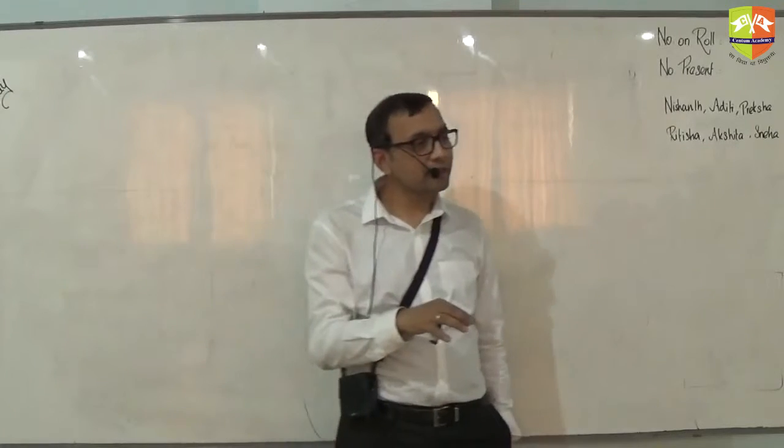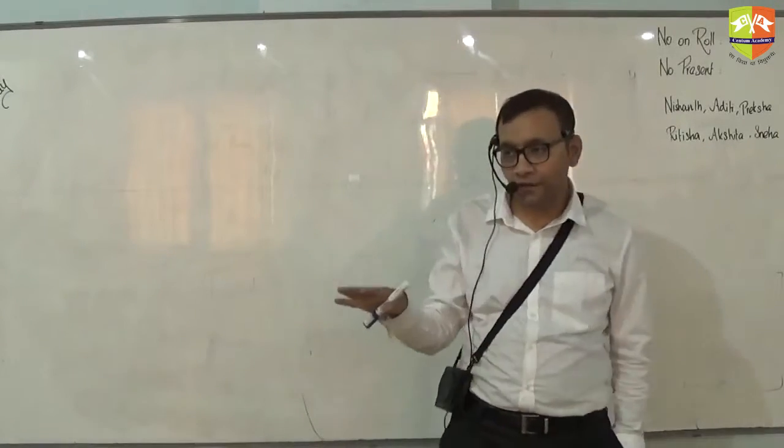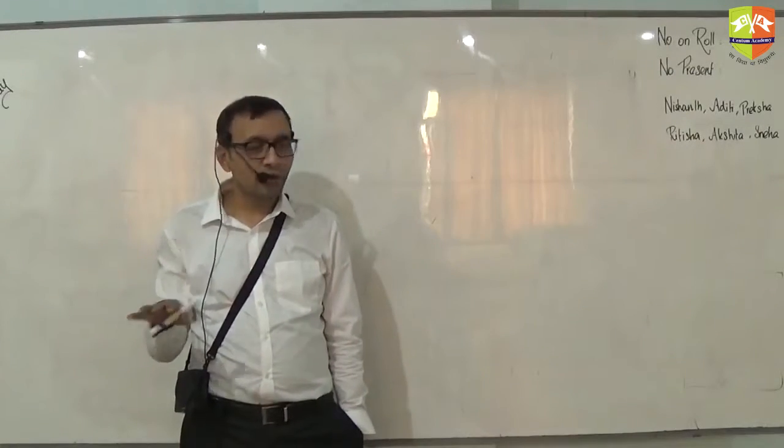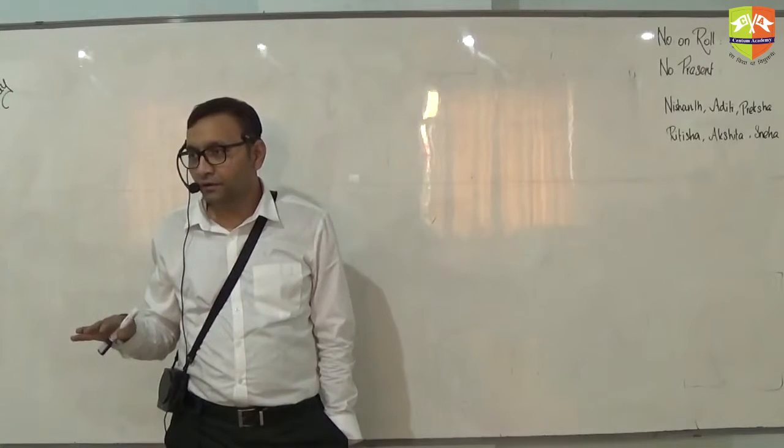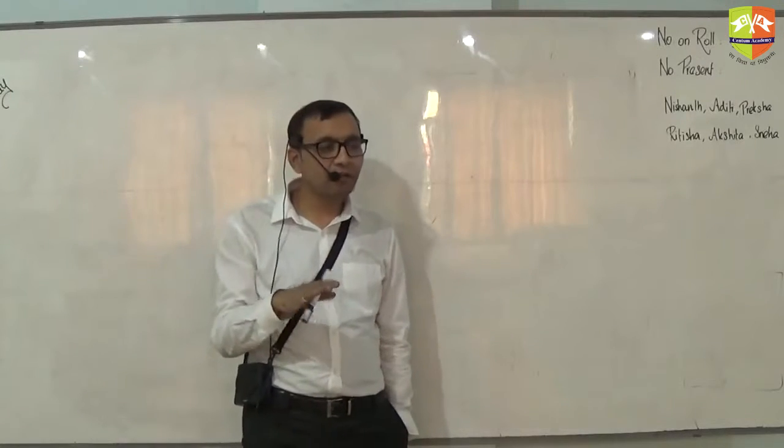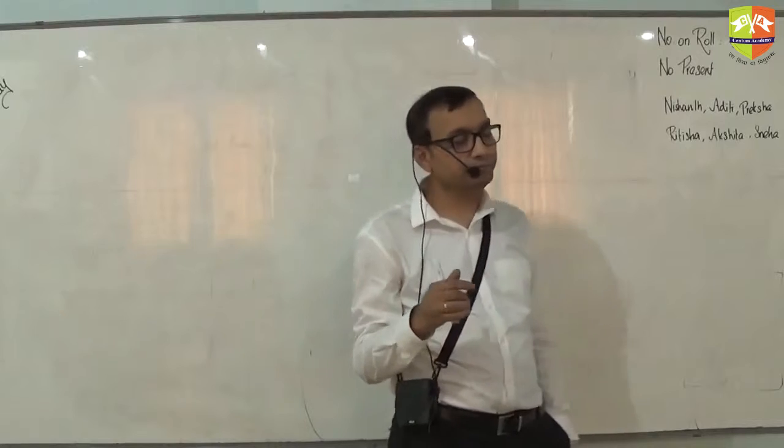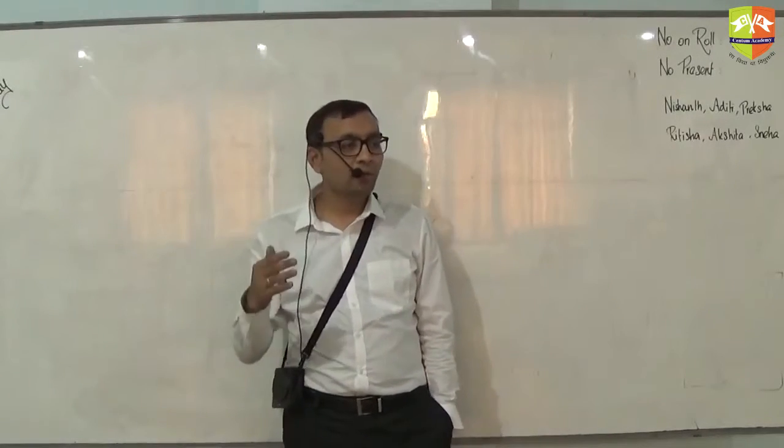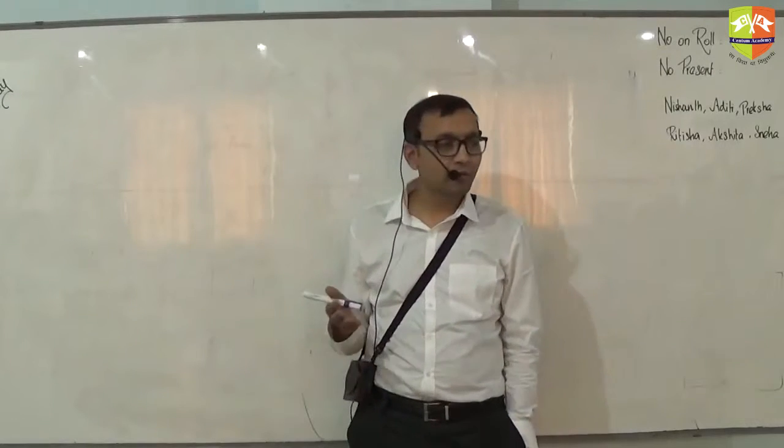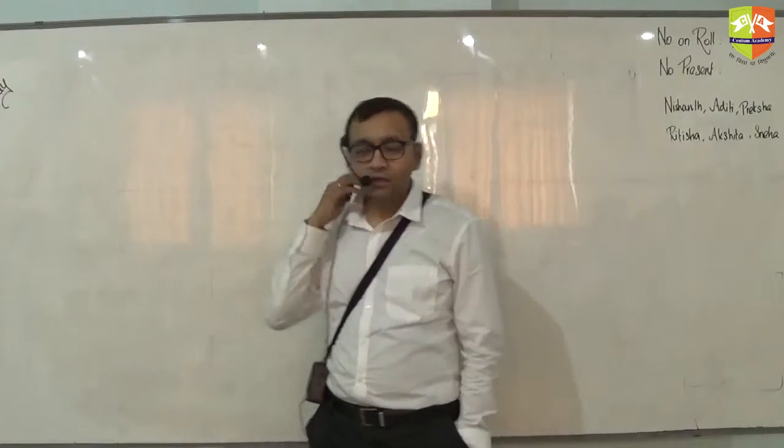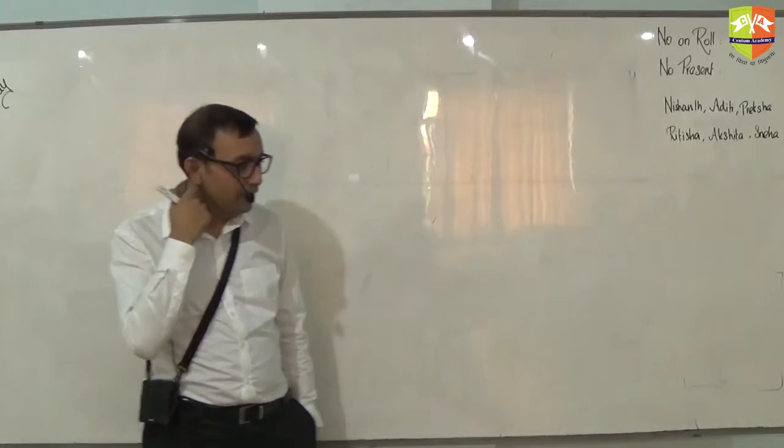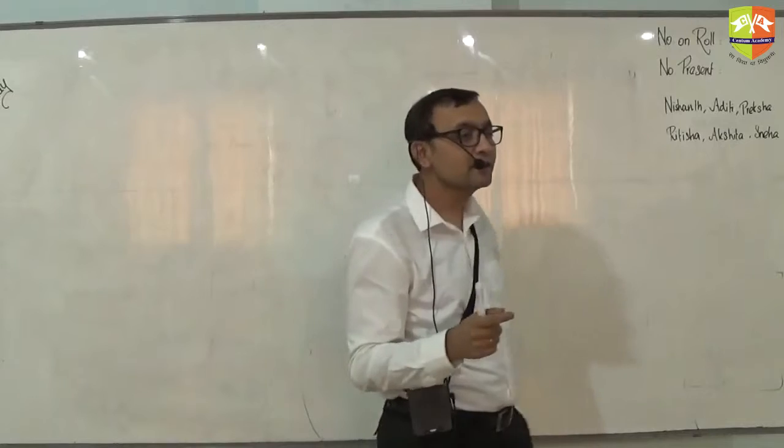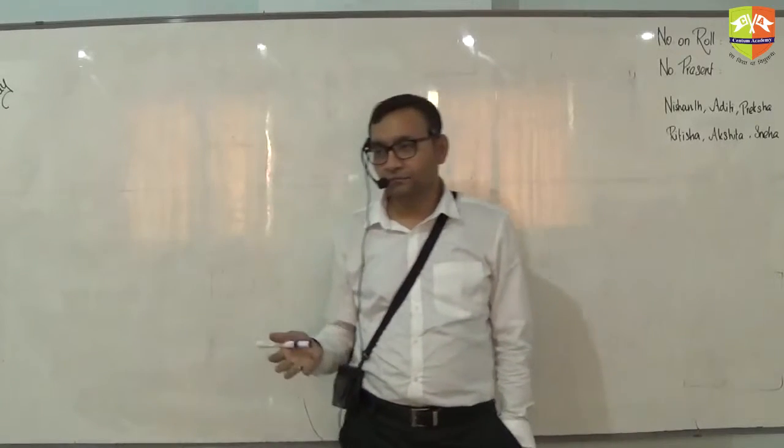We have already discussed about the horizontal surface, when the interface is horizontal or straight or planar. We learned about using Snell's law to find out where the image will be, how much shift in the object will be, the apparent shift. Then we also discussed a very peculiar phenomenon in refraction which is total internal reflection.